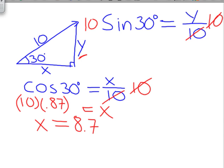And so now we have 10 times sine of 30 degrees. And I know that sine of 30 degrees is equal to 0.5. You can plug that into your calculator to verify, or hopefully you've memorized the 30, 60, 90 triangle. So now we have 10 multiplied by 0.5, and that equals y.